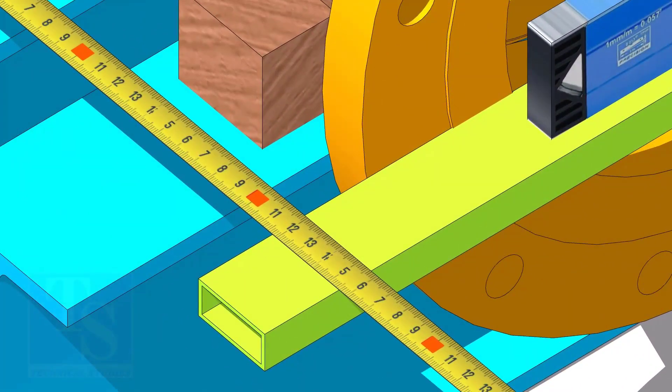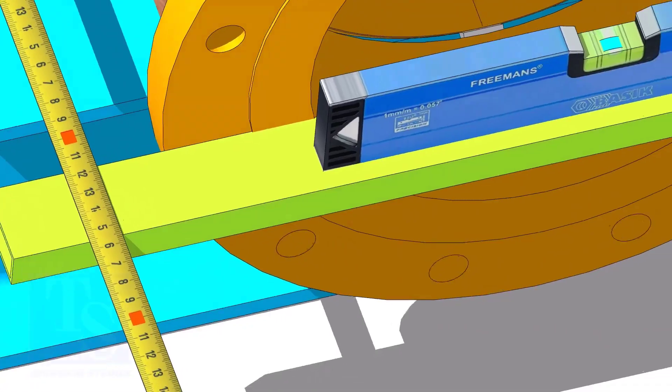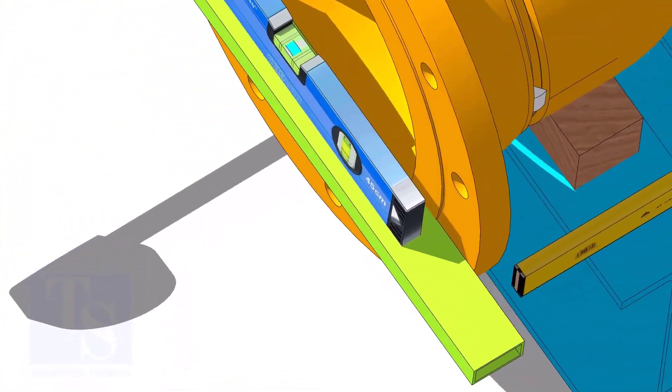Check the length of the spool on both sides, if the dimensions are equal or an acceptable limit, tack weld on both sides.